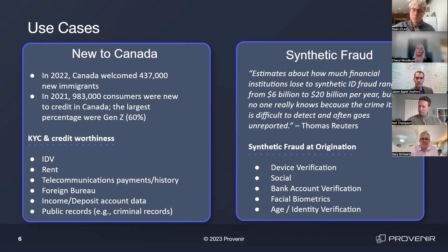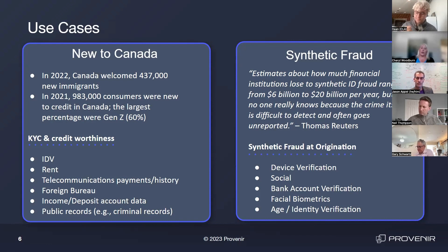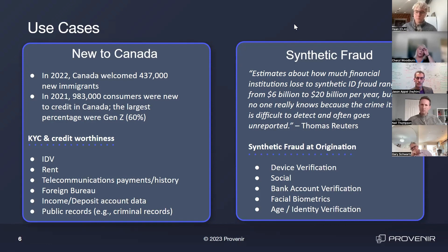So how do you detect and prevent this? Social is a really strong indicator — email and social signals: when was the email opened, how long has it been open, how many social accounts is that email associated with, the phone number, facial biometrics, age and identity verification, income and employment verification. There's a lot more data than ever before available to help with both of these factors. It's worth considering what your use case is — this is just a couple of examples to bring home how different data could be used depending on what you're looking to do.